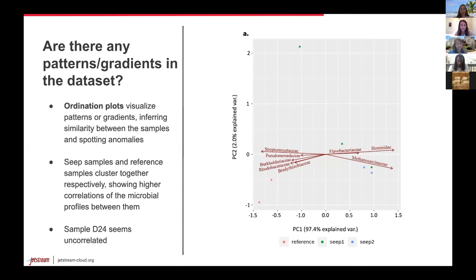Focusing on the PCA, the arrows show the direction and strength of the families which drive the distribution of the samples. The Hominidae family consists of human and ape DNA, so from this we can conclude that our data set has some sort of contamination. Additionally, one sample was plotted away from the others, which led us to take a closer look using an alluvial plot. The alluvial plot showed us that this sample has characteristics from all sites.